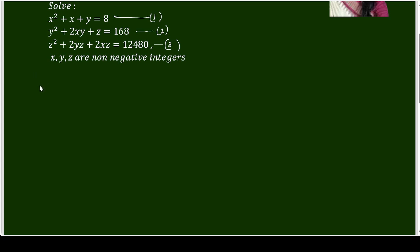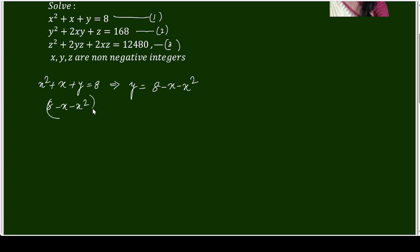I am writing equation 1: x² + x + y = 8. From this equation I will separate y: y = 8 − x − x². If I substitute this into equation 2, I get (8 − x − x²)² + 2xy = 8 − x − x² + z = 168. This will be equation 2, but it is very complicated.